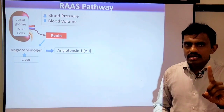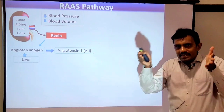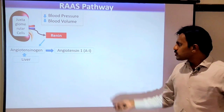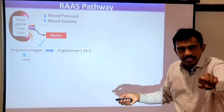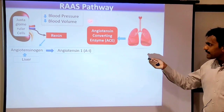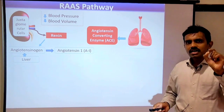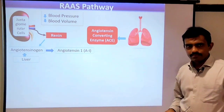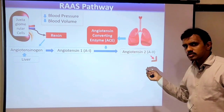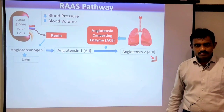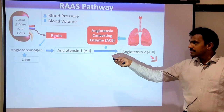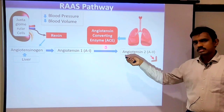You have to keep asking a single question in your mind: is it going to increase the BP? Because the RAAS pathway is activated to increase BP — BP dropped, that's why RAAS pathway got activated. So, does Angiotensin 1 increase blood pressure? No. A1, in the presence of an enzyme called Angiotensin Converting Enzyme (ACE), is converted to Angiotensin 2, or A2.